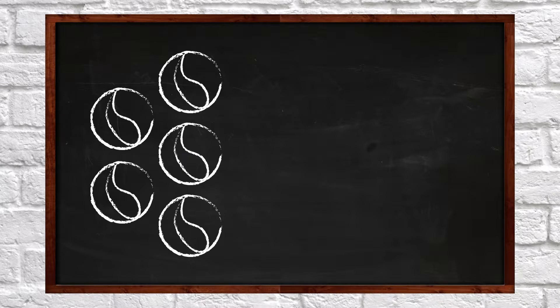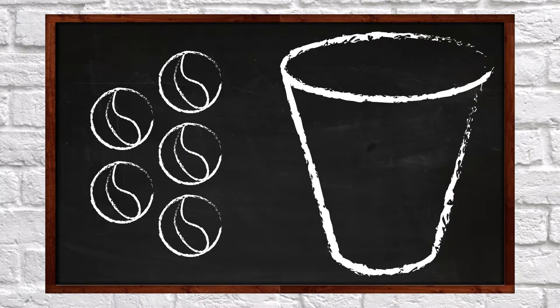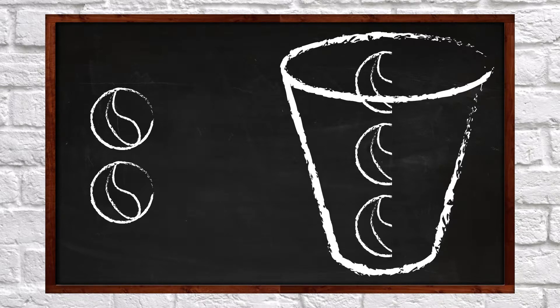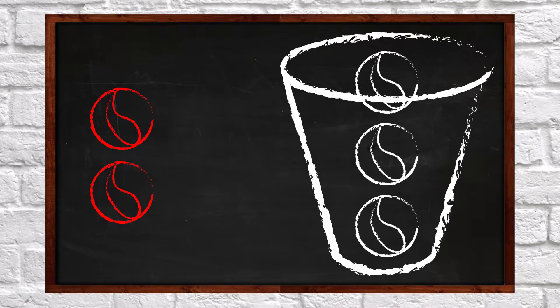For example, here are five marbles. If I subtract three of the marbles, then I have two marbles left. We write it like this: five minus three equals two.